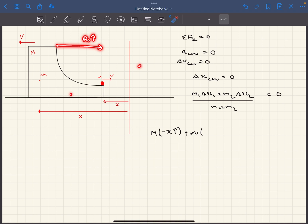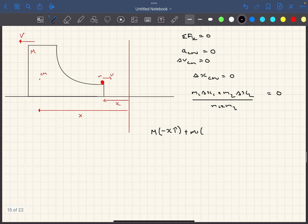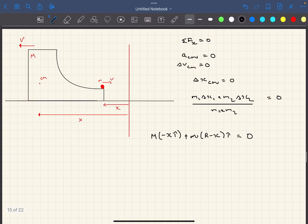But this block itself has moved by a distance of x towards the left. So in the ground frame, the displacement of the small m mass is going to be r minus x in the i-cap direction. This is going to be 0 which means from here we'll get the value of x as MR divided by small m plus capital M.